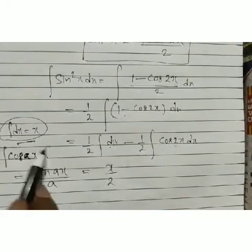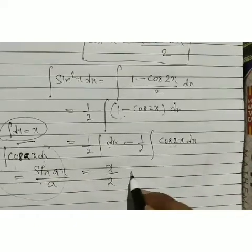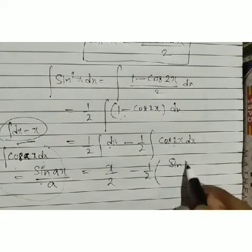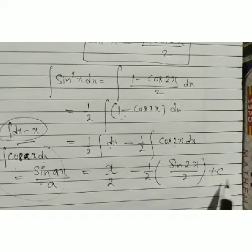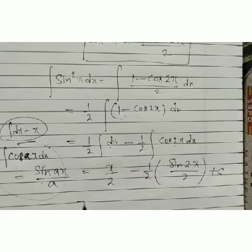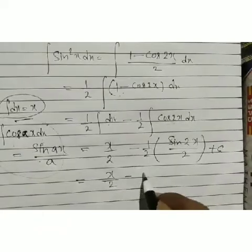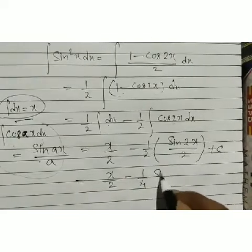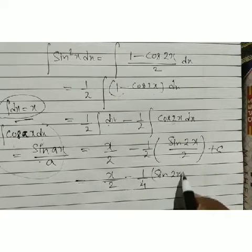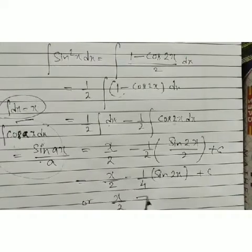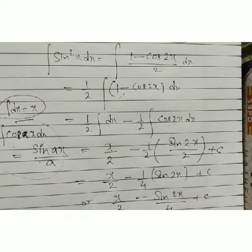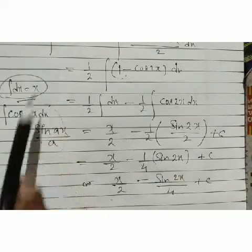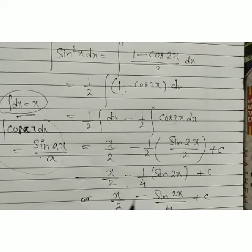Using this: (1/2)∫1 dx = x/2. And (1/2)∫cos 2x dx = (1/2)·(sin 2x)/2 = sin 2x/4. Therefore, the value of ∫sin²x dx = x/2 − sin 2x/4 + C.